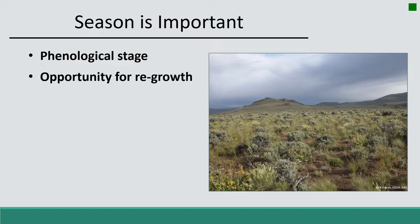With cheatgrass, the invasive species found throughout the West, it dries out early and makes the community more flammable. But our native plants may still be actively growing at that time, so when a fire occurs in this situation our native plants are much more susceptible and are less likely to respond positively to the disturbance that historically probably had little impact on them.